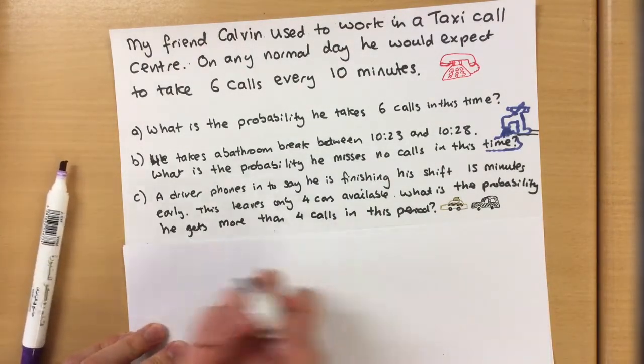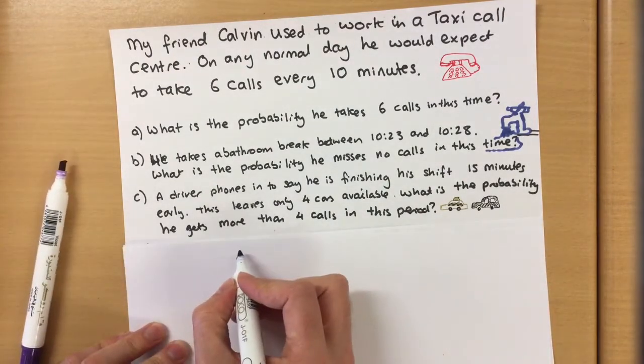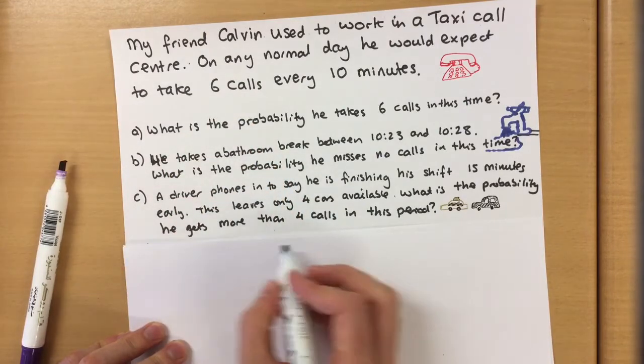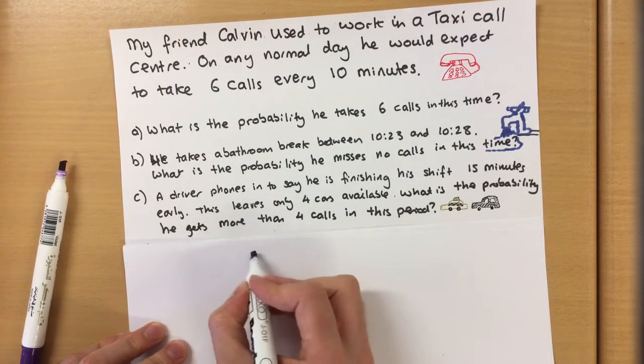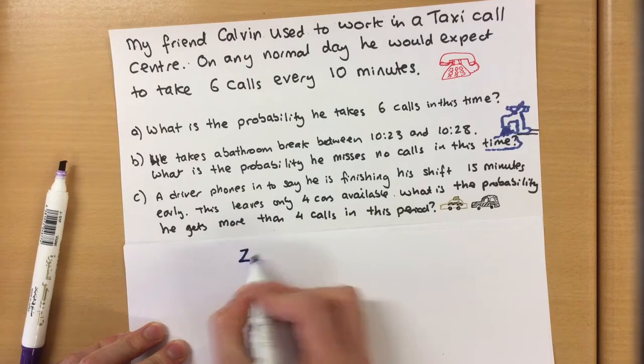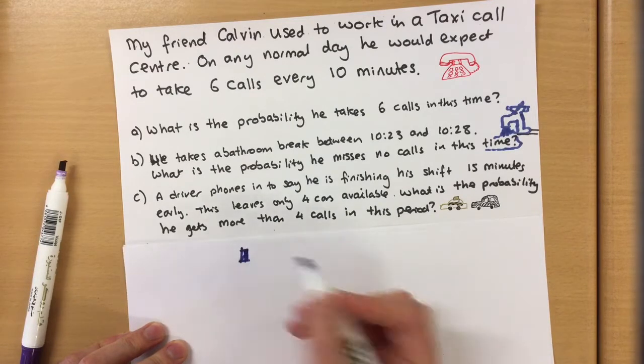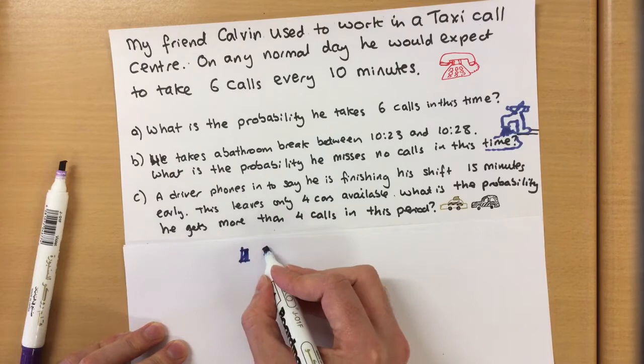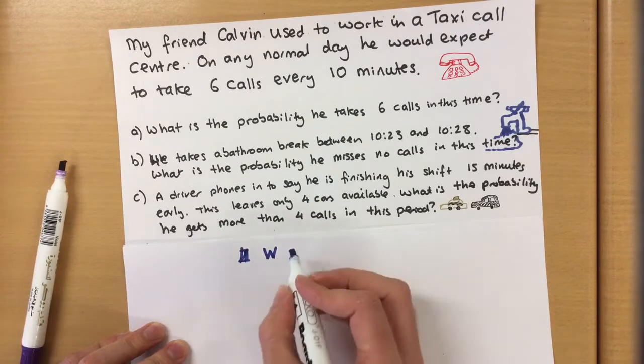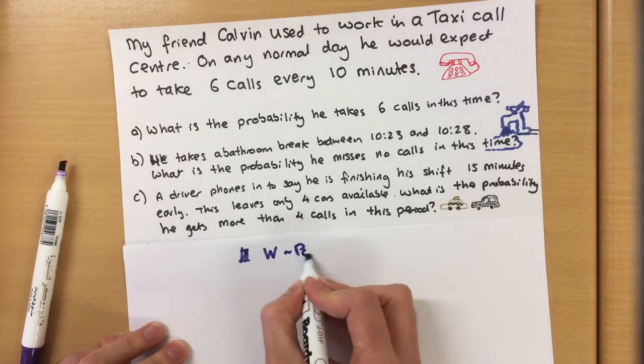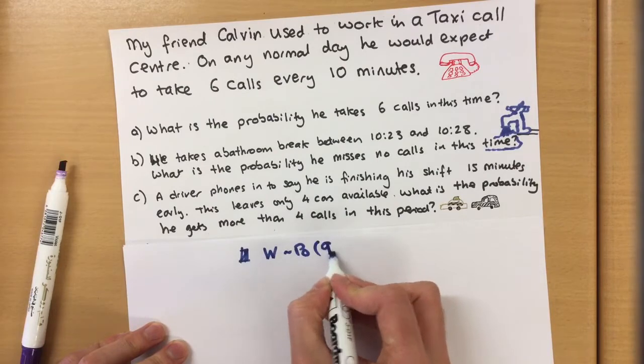So the new variable, 15, so in 15 minutes you should expect to get nine calls. So now let's call it W, and this case is now Poisson with mean 9.